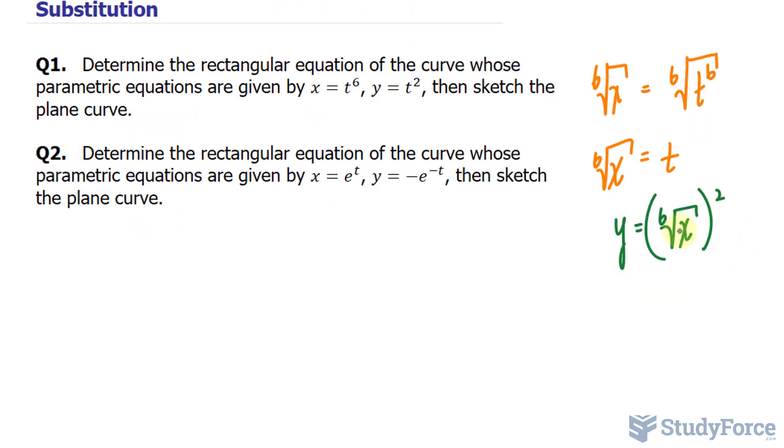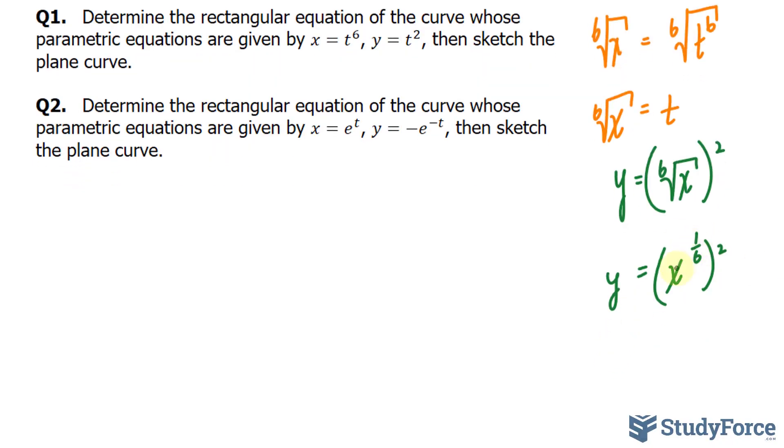Now remember the sixth root of x is the same thing as x to the power of 1 over 6. So I'll write down x to the power of 1 over 6 raised to the power of 2. And a sixth times 2 is 1 third. So I have x to the power of 1 third which is the third root of x.